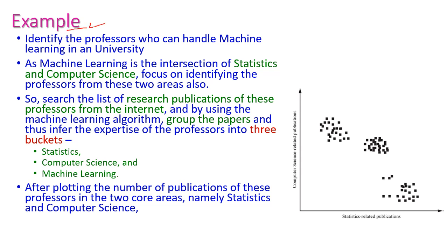Now let us see one example for clustering — identifying professors who can handle machine learning subjects in a university. Machine learning is the intersection of statistics and computer science, so the professor should have knowledge in both subjects. The results of research publications of these professors are gathered from the internet to see under which particular subject they have published papers. Using the machine learning algorithm, those papers will be grouped together to infer the expertise of the professor into three buckets.